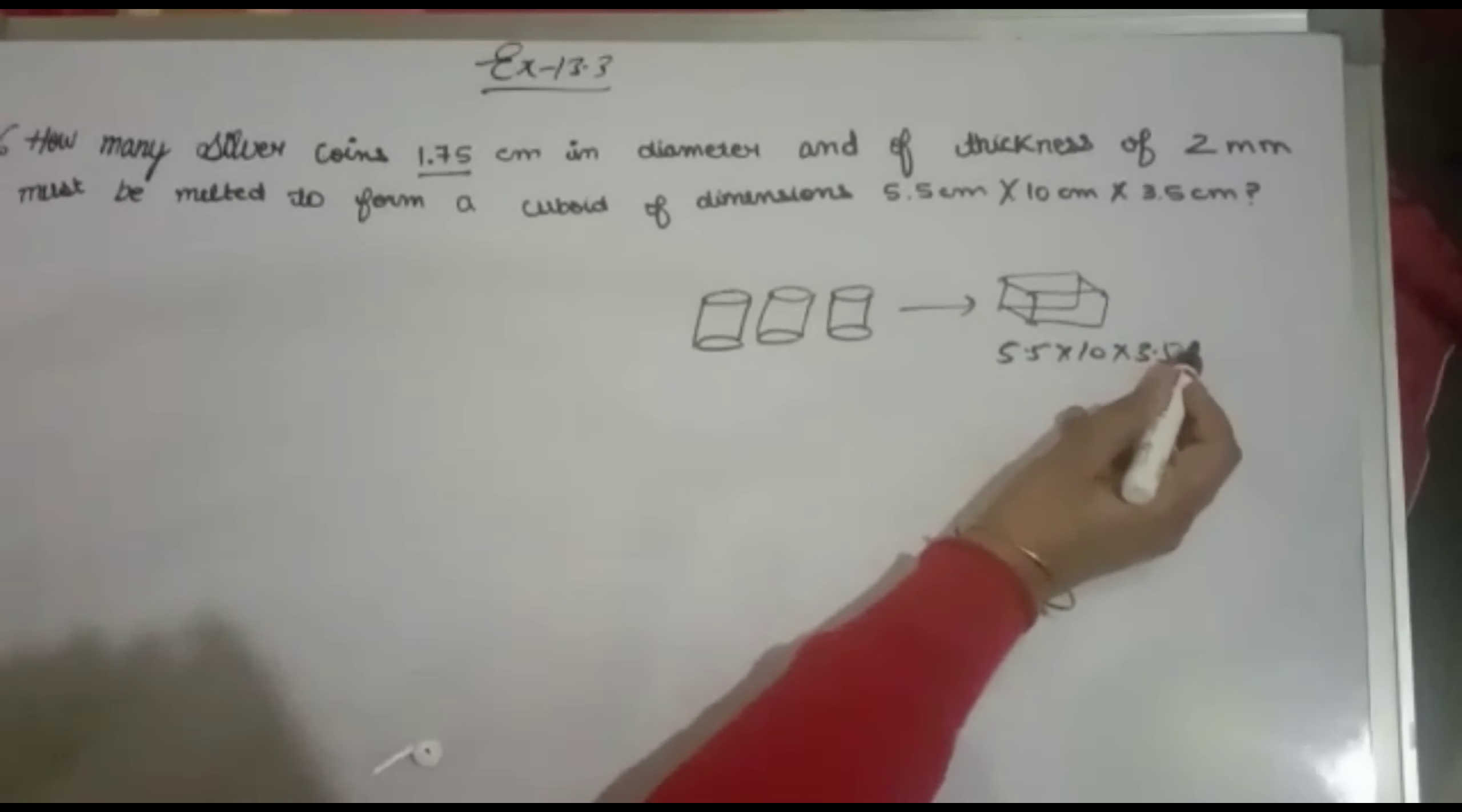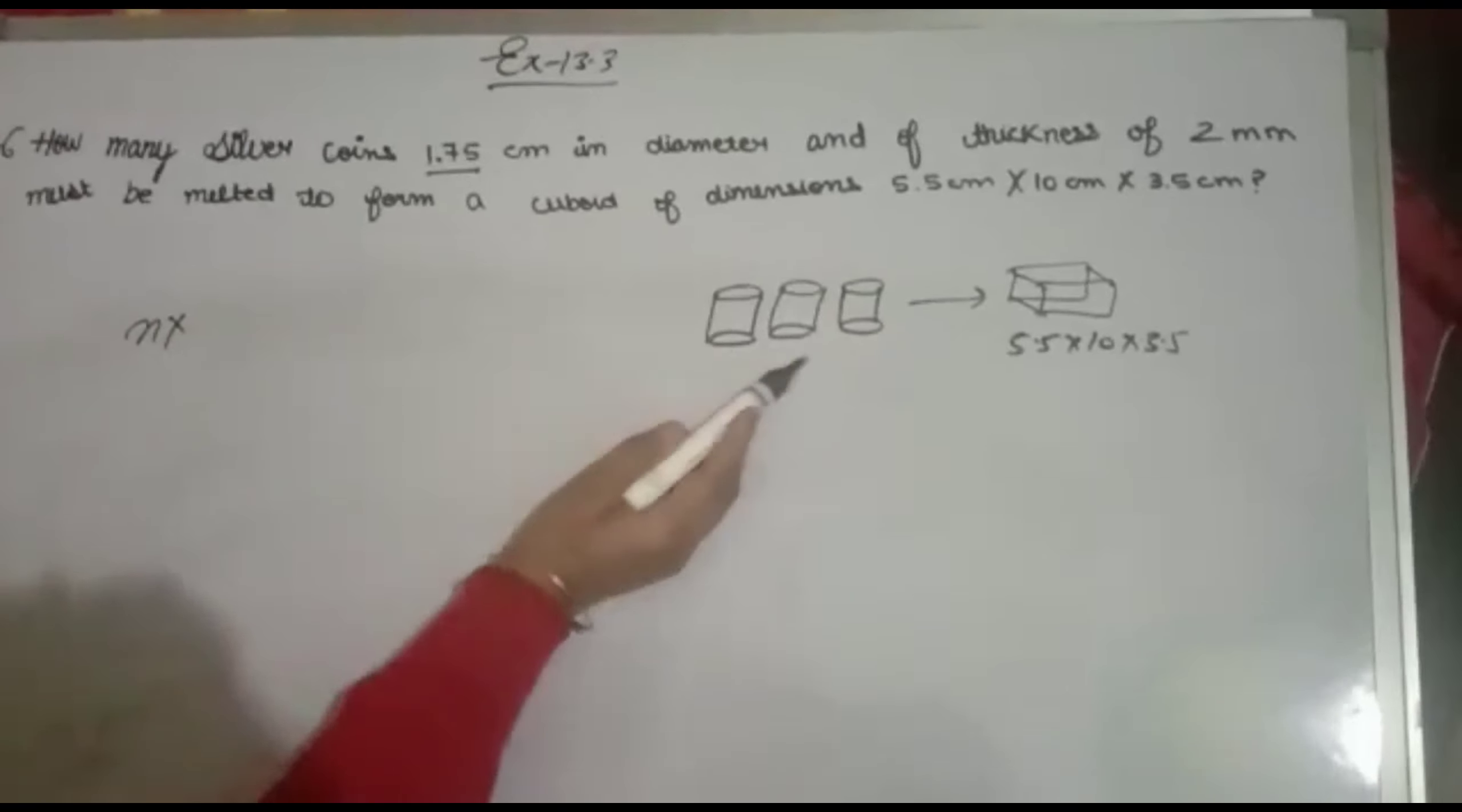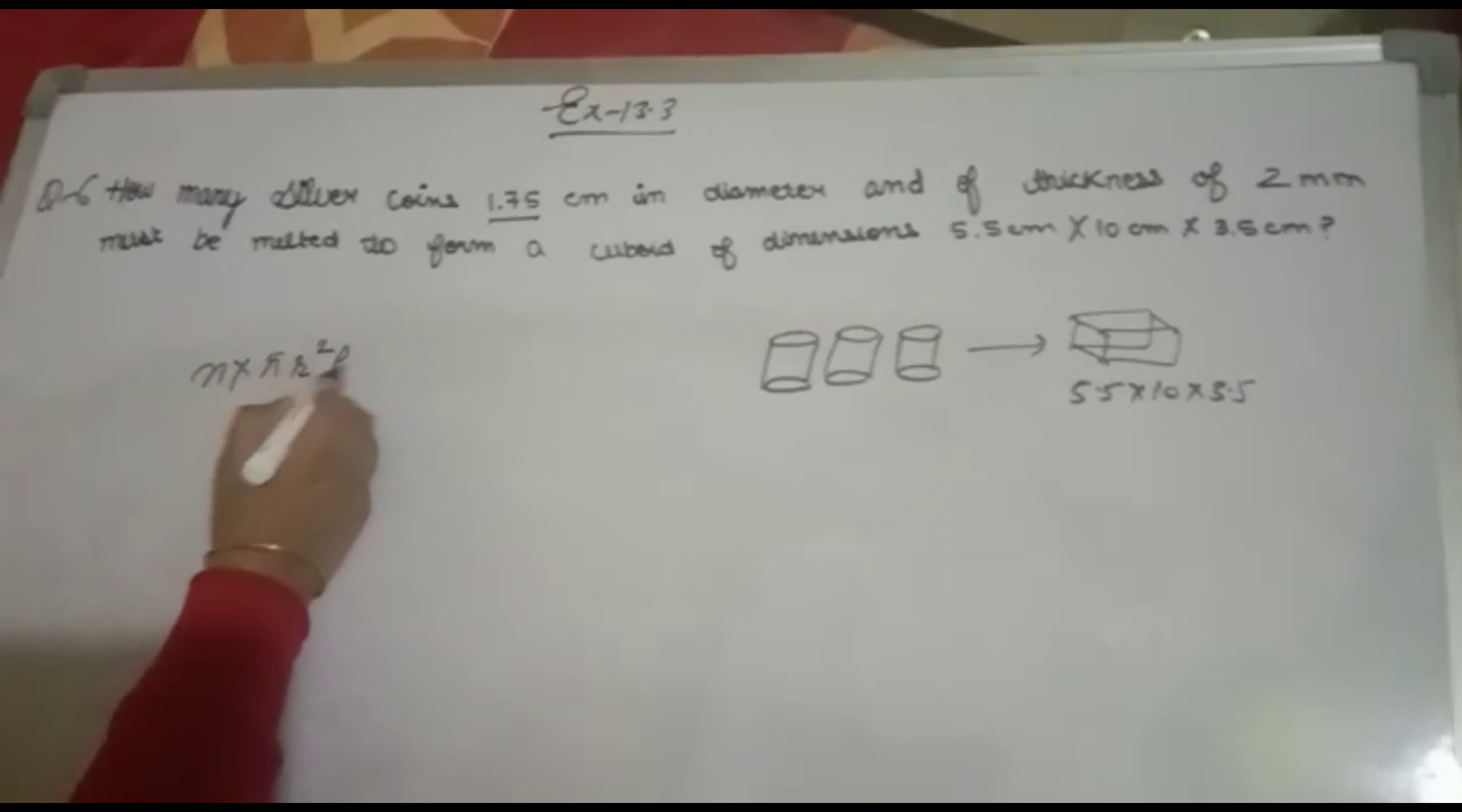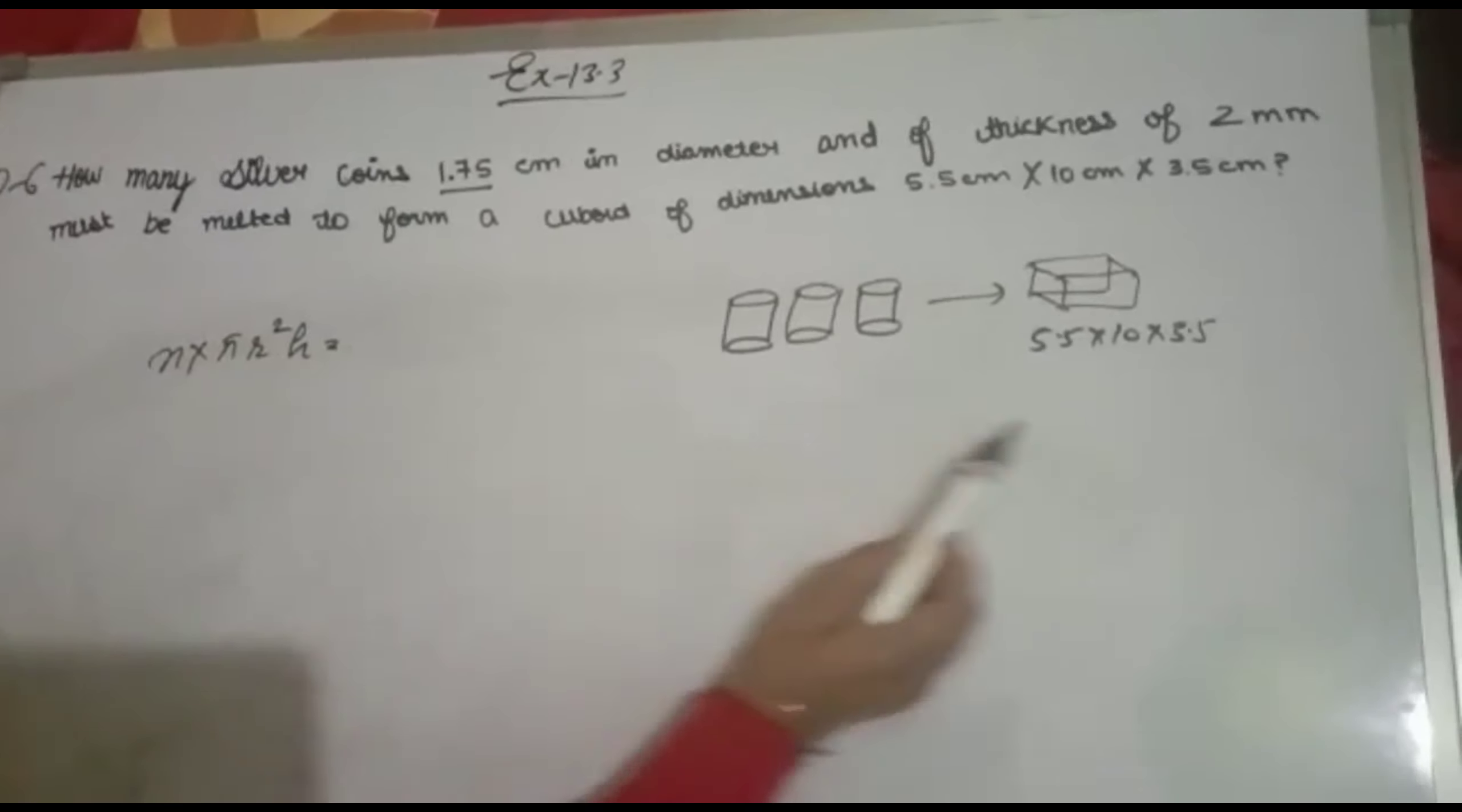Suppose there are n silver coins. Since they're being melted, the volume of n cylinders equals the volume of the cuboid. Setting up the equation: n × πr²h = length × breadth × height = 5.5 × 10 × 3.5